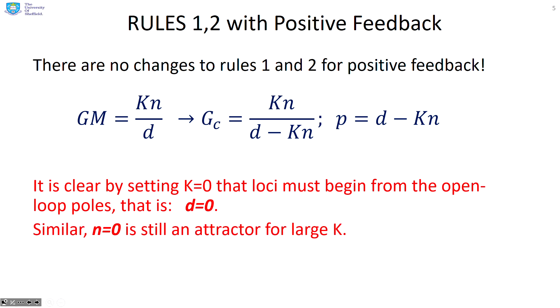Rules one and two then. The key thing here is there are no changes to rules one and two. They are the same with both positive and negative feedback. So you start with the open loop poles and open loop zeros.